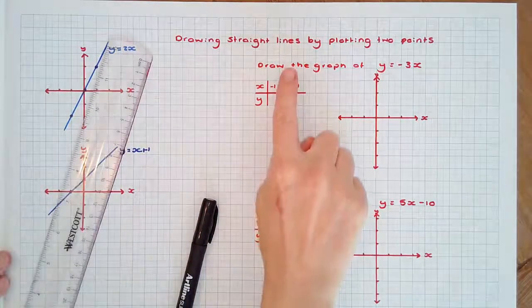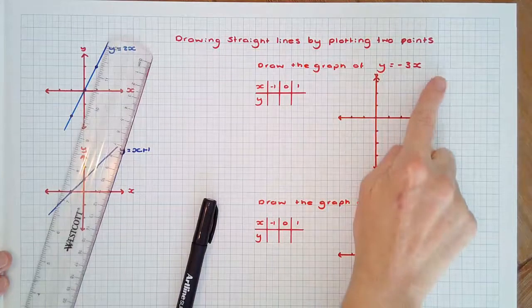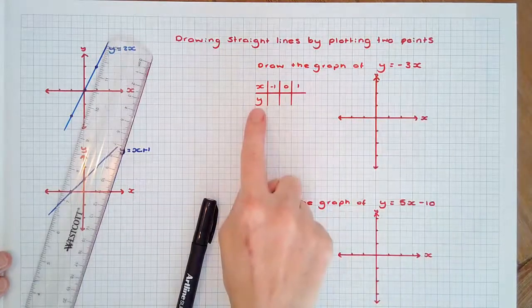For example, draw the graph of y equals negative 3x. First, make a table of values.